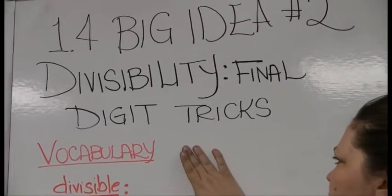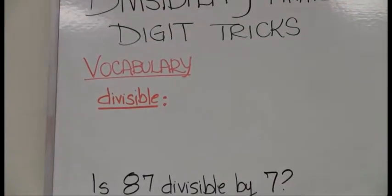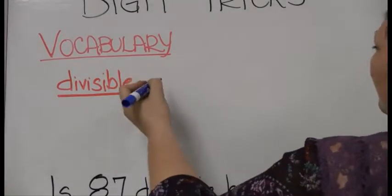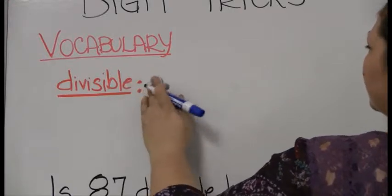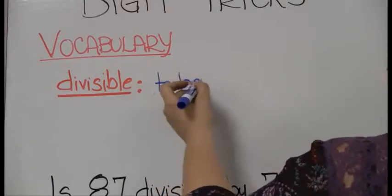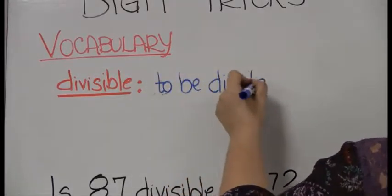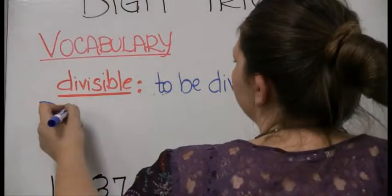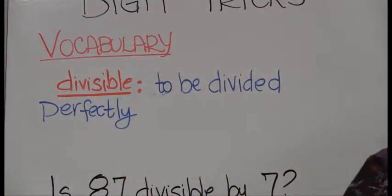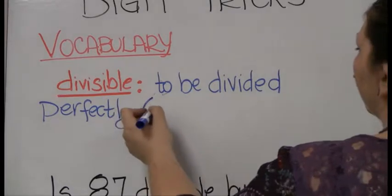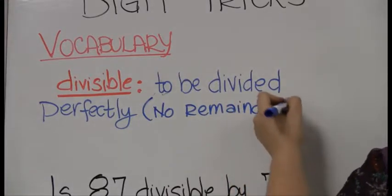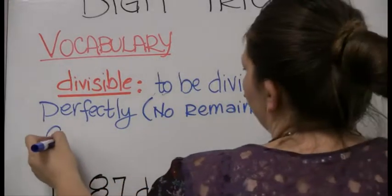To be able to do it, we need some vocabulary words. First word is, what does it mean to be divisible? To be divisible means when a number is divisible by another number, it divides it perfectly. What am I talking about perfectly? I'm talking about with no remainder. To be divided perfectly by another number, I'm saying no remainder.